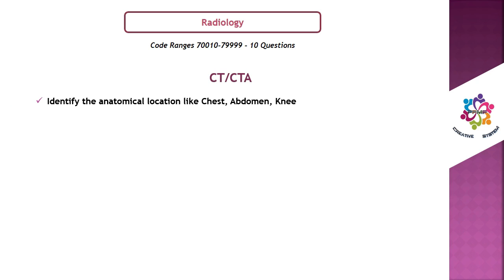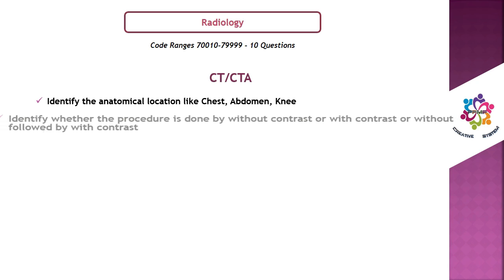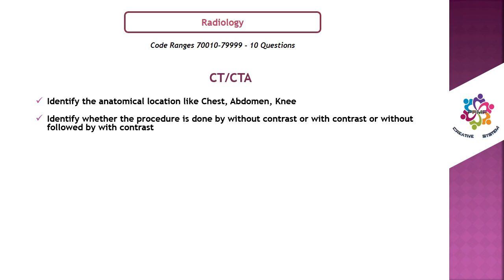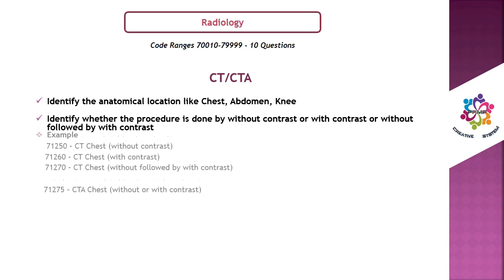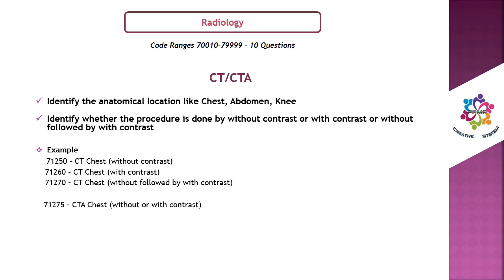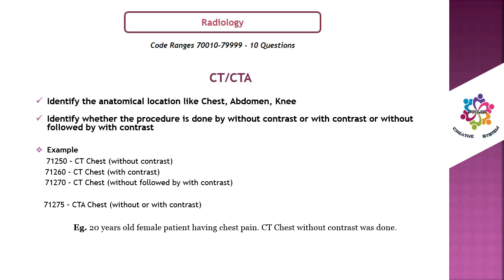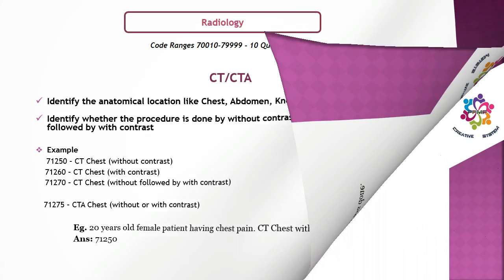Number 2: CT or CTA. Identify the anatomical location (chest, abdomen, knee) and whether the procedure is done without contrast, with contrast, or without followed by with contrast. For example: 71250 = CT chest without contrast; 71260 = CT chest with contrast; 71270 = CT chest without followed by with contrast; 71275 = CTA chest without or with contrast. Scenario: a 20-year-old female with chest pain, CT chest without contrast — the answer is 71250.